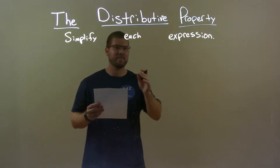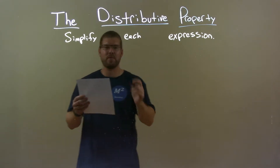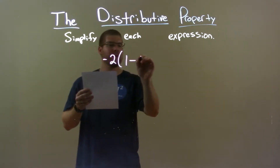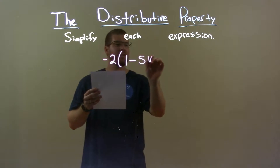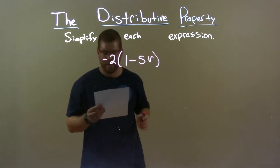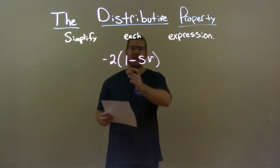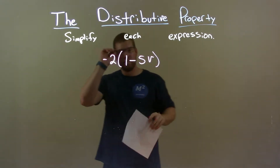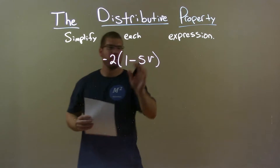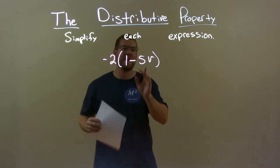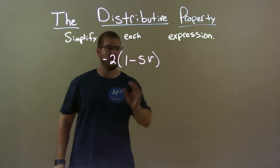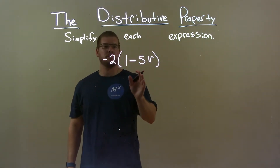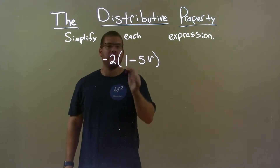If I was given this expression — negative 2 times 1 minus 5v — inside the parenthesis we cannot simplify anything, so we look at the distributive property now.